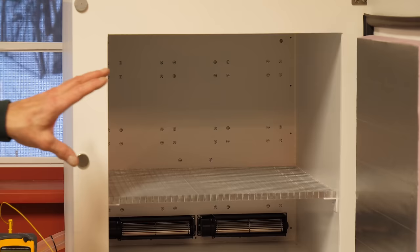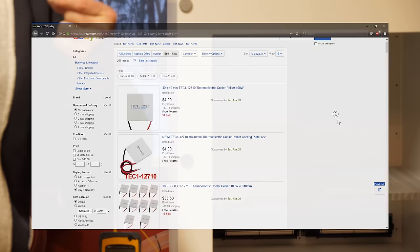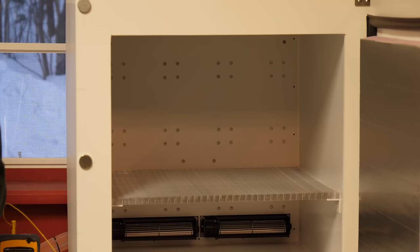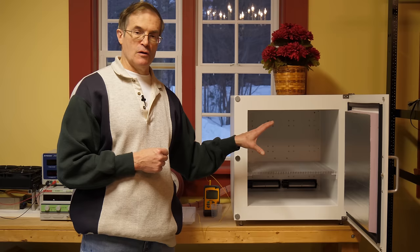In addition, this unit, instead of having six of the TEC1-12710 40 millimeter by 40 millimeter by 3 millimeter thick TECs that you can get on eBay for about $4 each, we've gone with 12 on this unit. The more gently you operate these, the lower the energy input, the more efficiently they will pump heat. So we can lower the power consumption and allow us to get to lower temperatures by going to the 12 TECs.